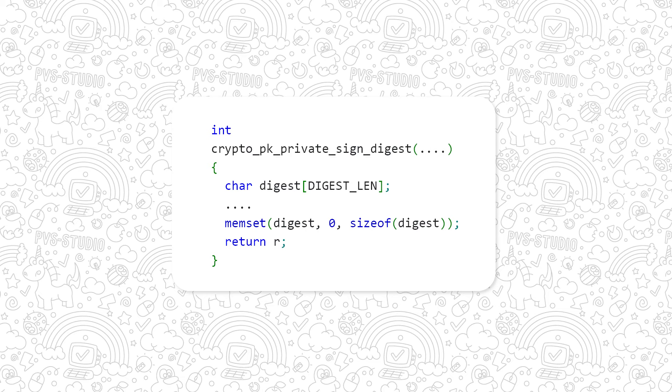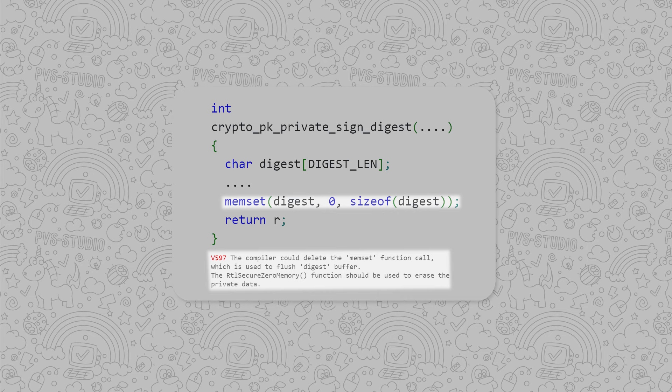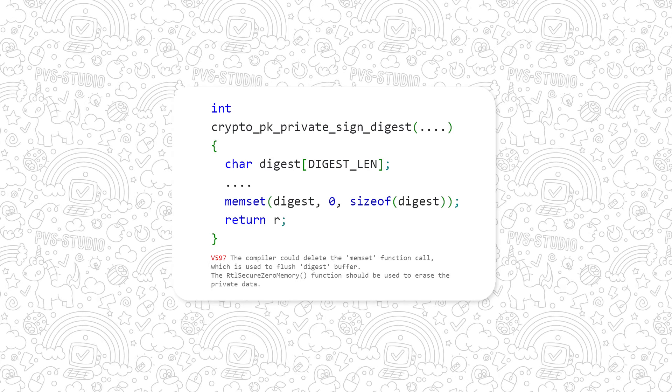And here we can see some compiler magic. This code snippet comes from the Tor project, so security is crucial here. Before the function exits, the memset function call fills the digest array with zeros. However, since the digest array is not used anywhere else, the compiler considers rewriting to be excessive and removes the memset function call. Because of this, the memory retains sensitive data and intruders can access it. Special variants of the memset function were created specifically so they do not get removed by the compiler.